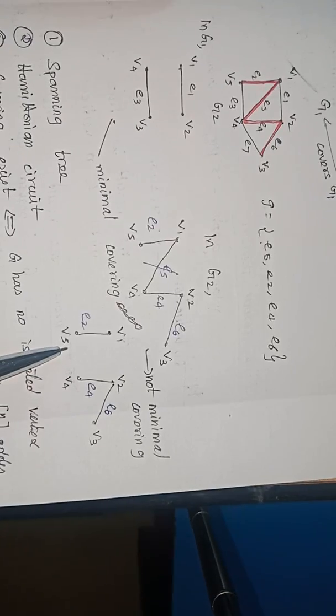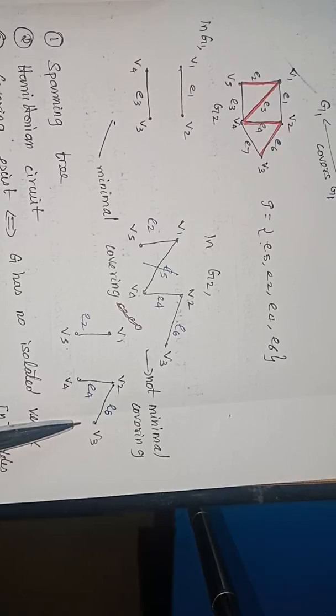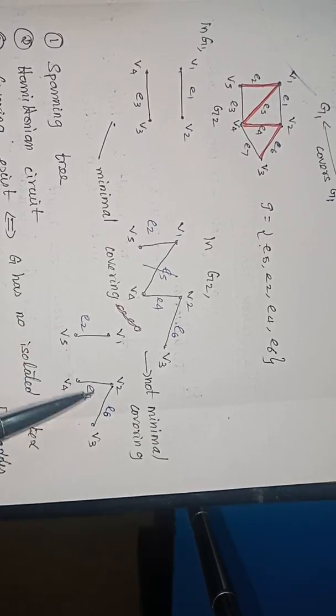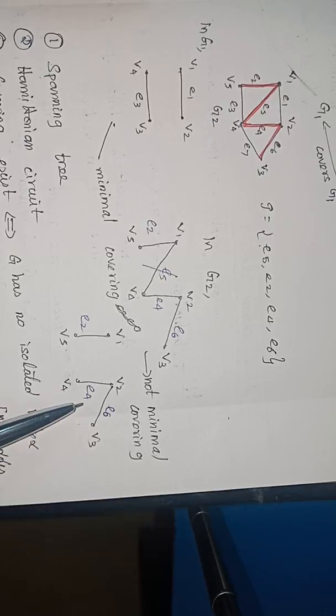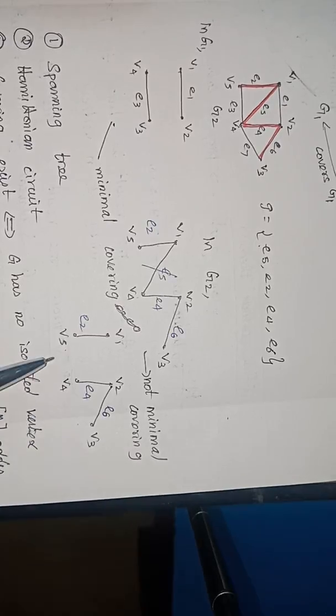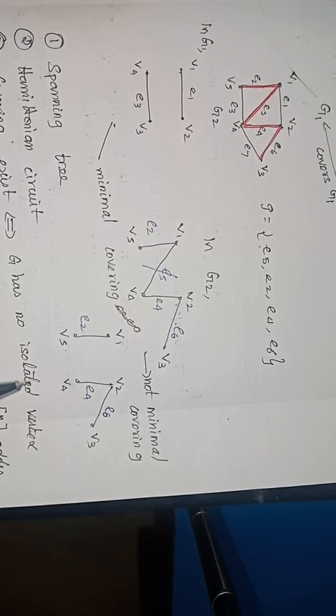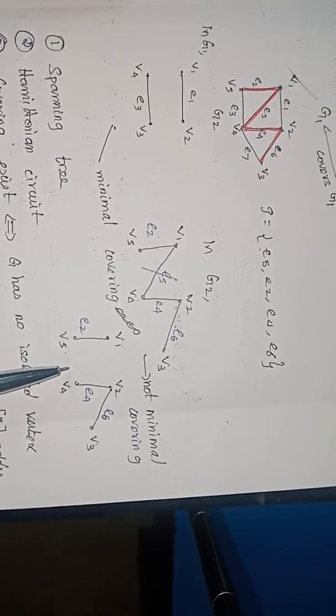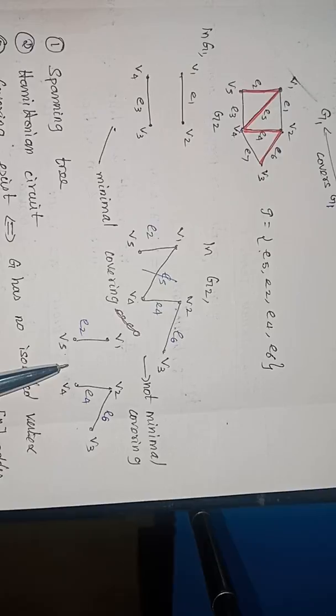This is called a minimal covering. Now, if it is possible to find another minimal covering with fewer number of edges, then the covering which is minimal and which has fewer edges — the number of edges in the minimal covering with fewer edges is said to be a covering number.